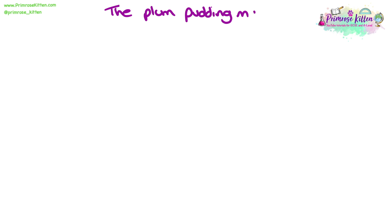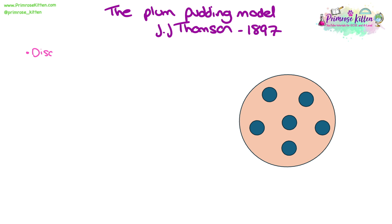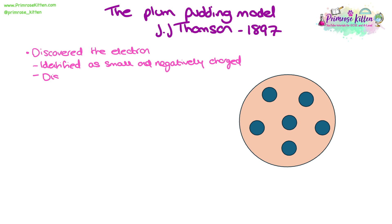The next model is the plum pudding model, suggested by J.J. Thomson in 1897, based on the work done by John Dalton with some new features. A key update was the discovery of the electron, identified to be very small and negatively charged. This also disproved Dalton's idea that atoms could not be divided, because clearly they were made up of smaller subatomic particles — in this case, the electron.